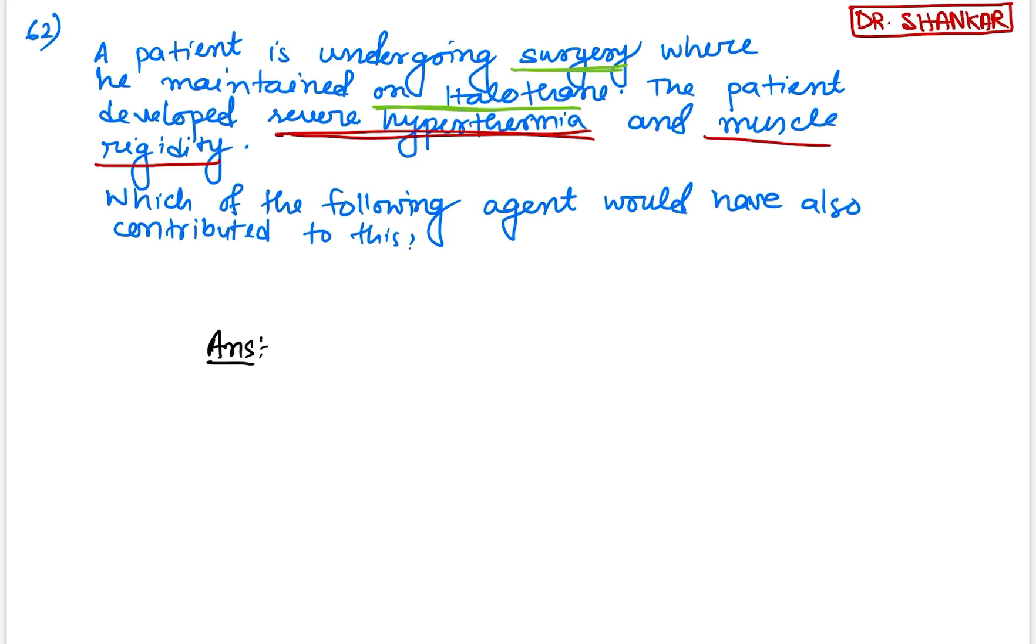Which of the following agents would have also contributed to this? What is the diagnosis? So the case is diagnosed to be a case of malignant hyperthermia. Severe hyperthermia, muscle rigidity like masseter spasm and hyperthermia are features of malignant hyperthermia. So which of the agents would have also contributed to this among the options? The answer will be succinylcholine or suxamethonium. Succinylcholine would have contributed to malignant hyperthermia in this case.